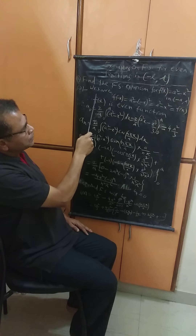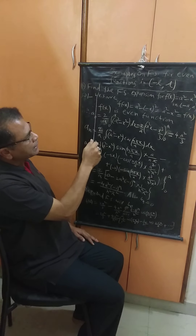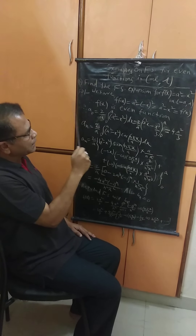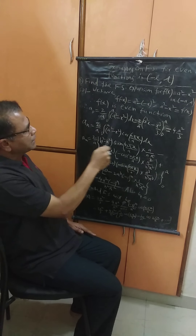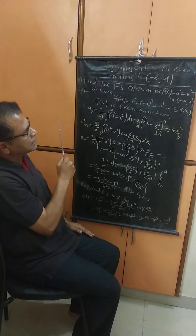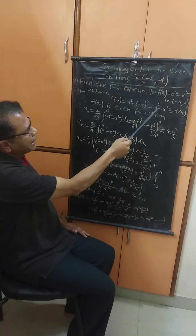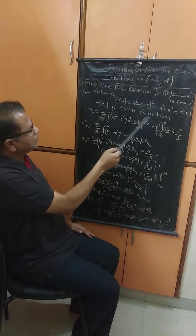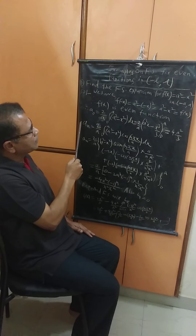As I have already told you, we consider even and odd functions when the interval is symmetric, like minus a to plus a, minus two to plus two, minus pi to plus pi, etc. Otherwise, do not consider even and odd. Here, the interval is minus a to a, so we check whether the given function is even or odd. We find f(minus x) and obtain a² minus x², which is again f(x). This concludes f(x) is an even function. For even functions, we know bn is 0 and only a0 and an need to be found.